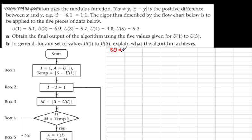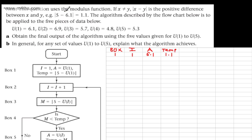Looking at box number one, this is an instruction: let I be equal to one. So I need a column for I, and in box one I equals one. We're then told A is equal to U1, so A gets a column — U1 is 6.1. Next, temp is the modulus of 5 minus U1. Since U1 is 6.1, we do 5 minus 6.1, take the modulus, and get 1.1. They've actually done the first one for us, so we write in 1.1. We've done box one.